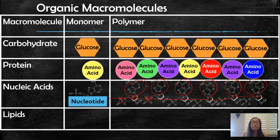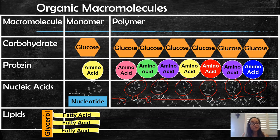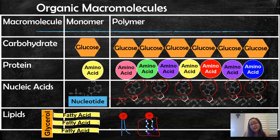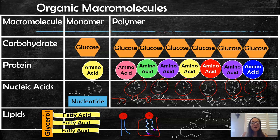Lipids, however, don't follow the monomer-polymer rule. Lipids are macromolecules, but they're not built in a repeating chain. Instead, there are different categories of lipids: triglycerides, which include fats, waxes, and oils; cell membrane phospholipids, where the fatty acid tails are lipids; and sterols, which include sex hormones, steroid hormones, fat-soluble vitamins, and cholesterol. All three are lipids, but they aren't in the normal monomer-polymer fashion. They are made of C, H, and O.